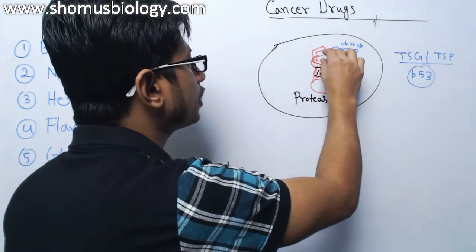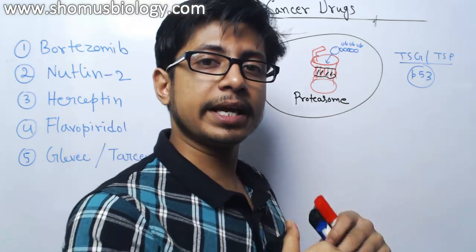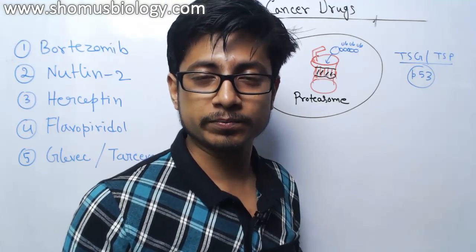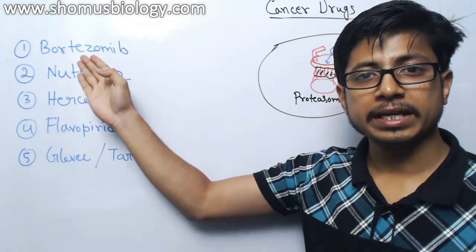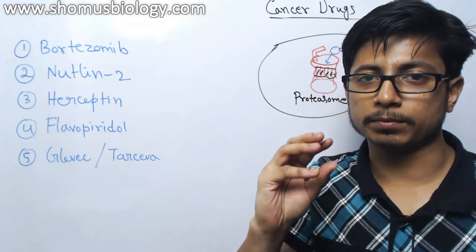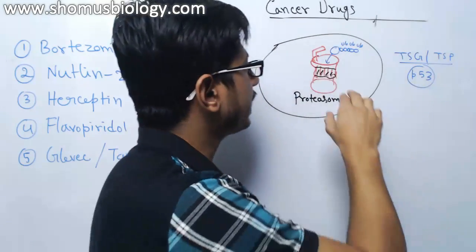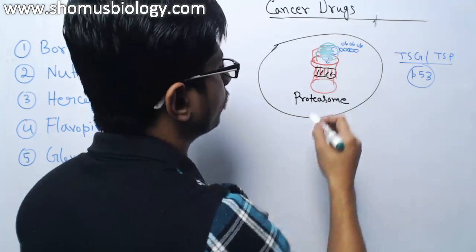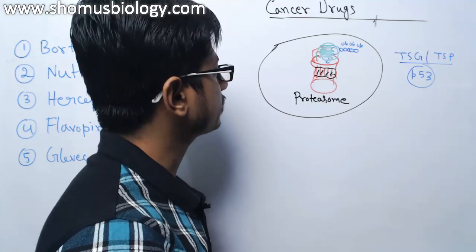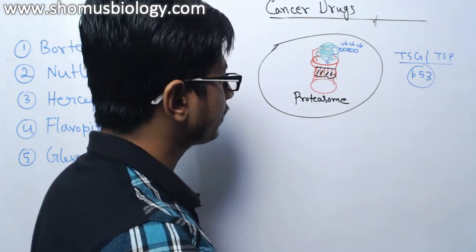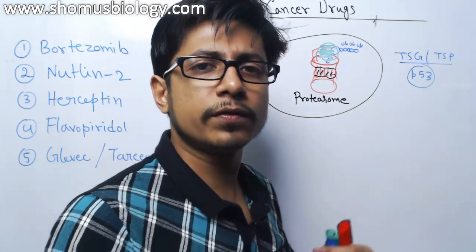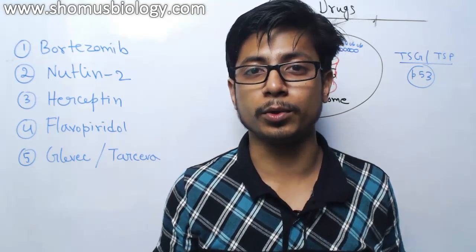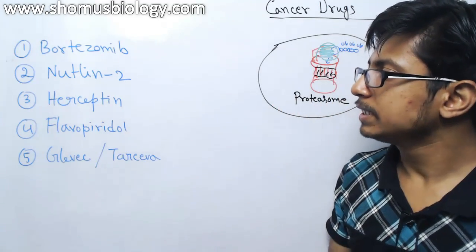Scientists found that if we can block the entry point of the proteasome, proteins will not be allowed to enter the complex, preventing cancer cells from growing. Bortezomib is a drug that blocks the entry point of the proteasome. As cancer cells rely heavily on proteasome activity, blocking it will not allow them to grow — that is the idea behind bortezomib.